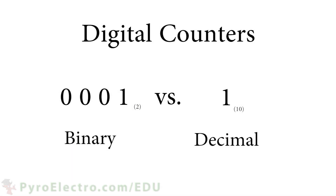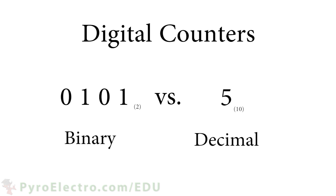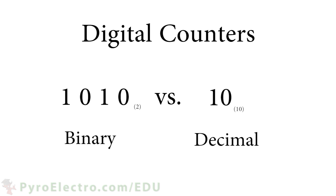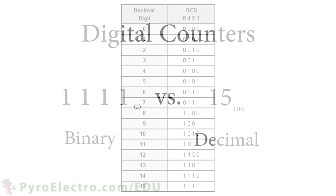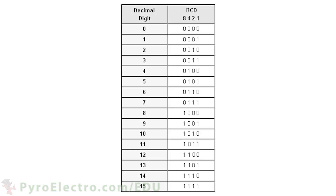In this lesson we're going to study one of the most important ideas in all of digital electronics: how to make a digital counter. Digital counters offer us a simple way to keep track of timing and to trigger other electronics at specific timing intervals. The digital counter that we're going to build will be a 4-bit binary counter, which means that it can count in binary from 0000 up to 1111.